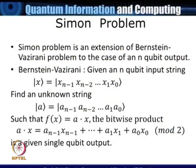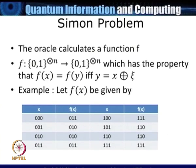In the last lecture we introduced the Bernstein-Vazirani problem. Basically, given an n-qubit input string x (x0 to x_{n-1}), we need to find an unknown n-qubit string a (a0 to a_{n-1}), such that if we take the sum of the bitwise products a0·x0 + a1·x1 + ... modulo 2, we get a single qubit output. Given this single qubit output and the n-qubit input string, we need to find the unknown string a.